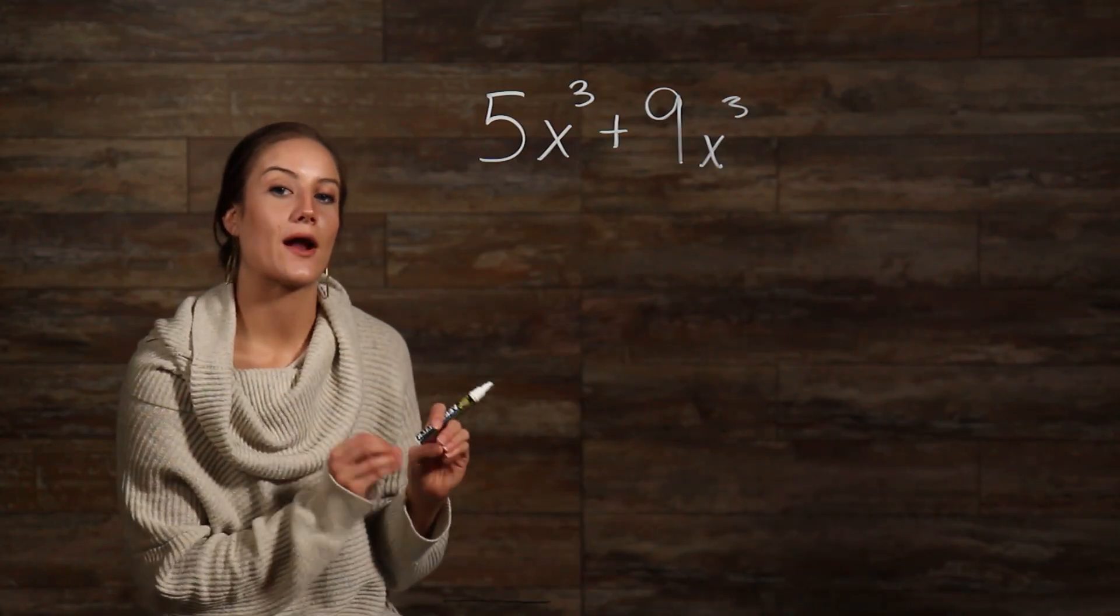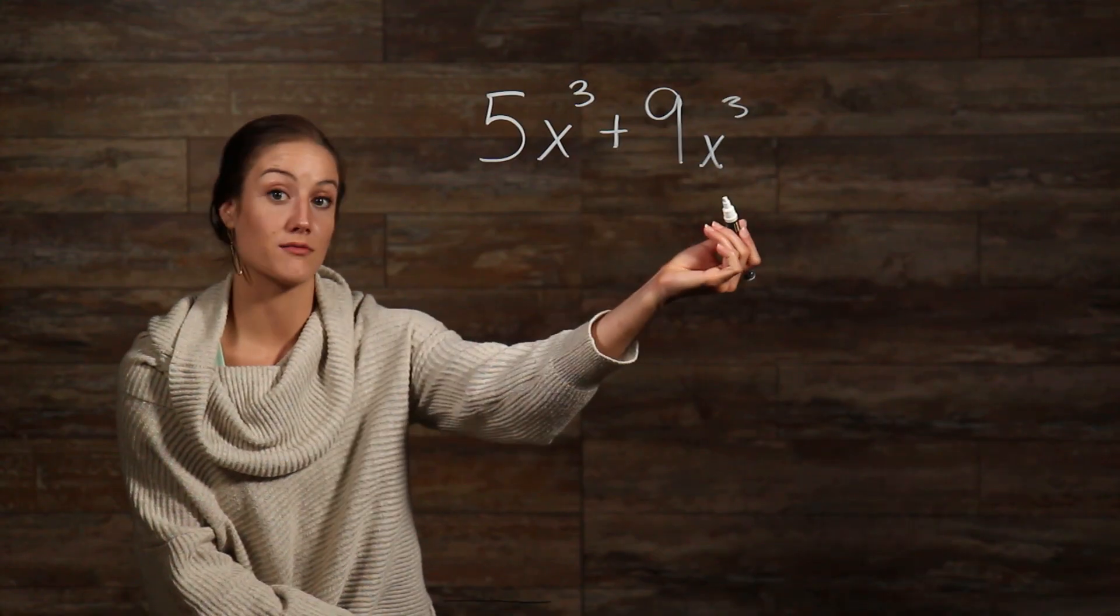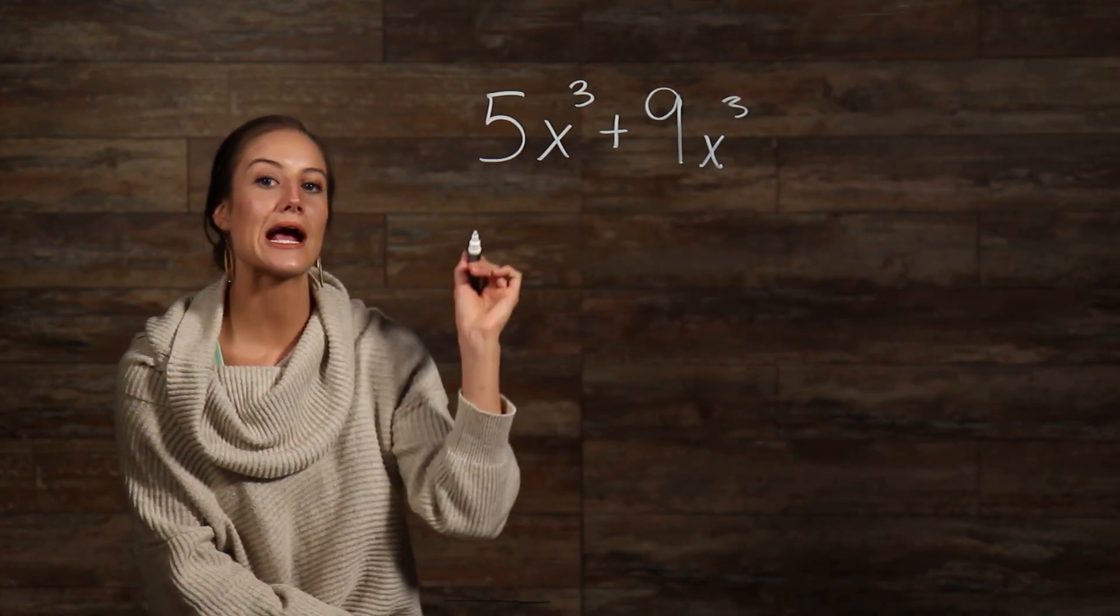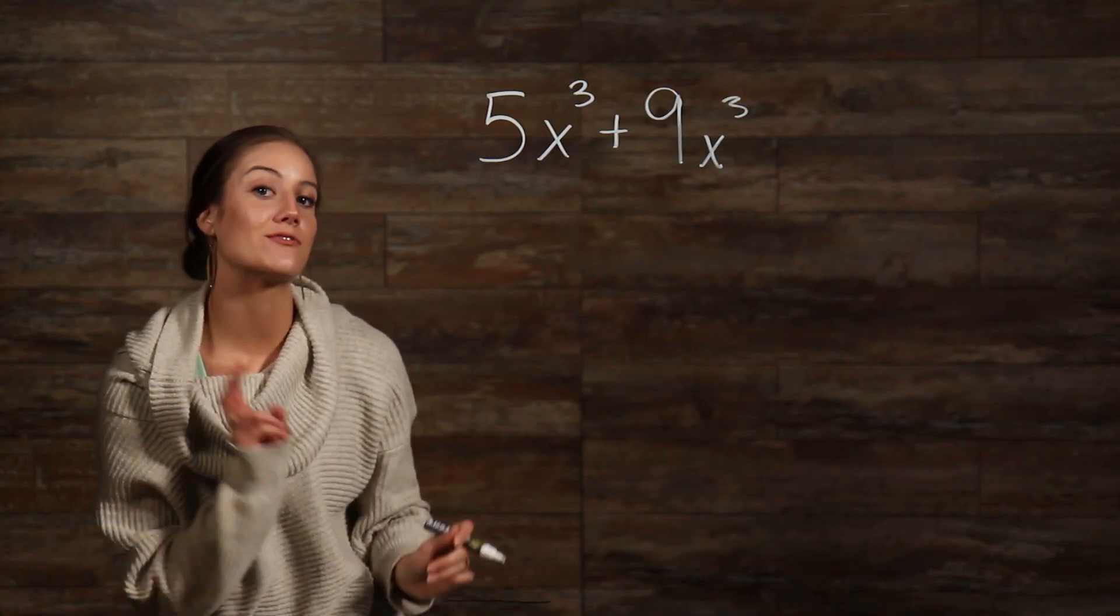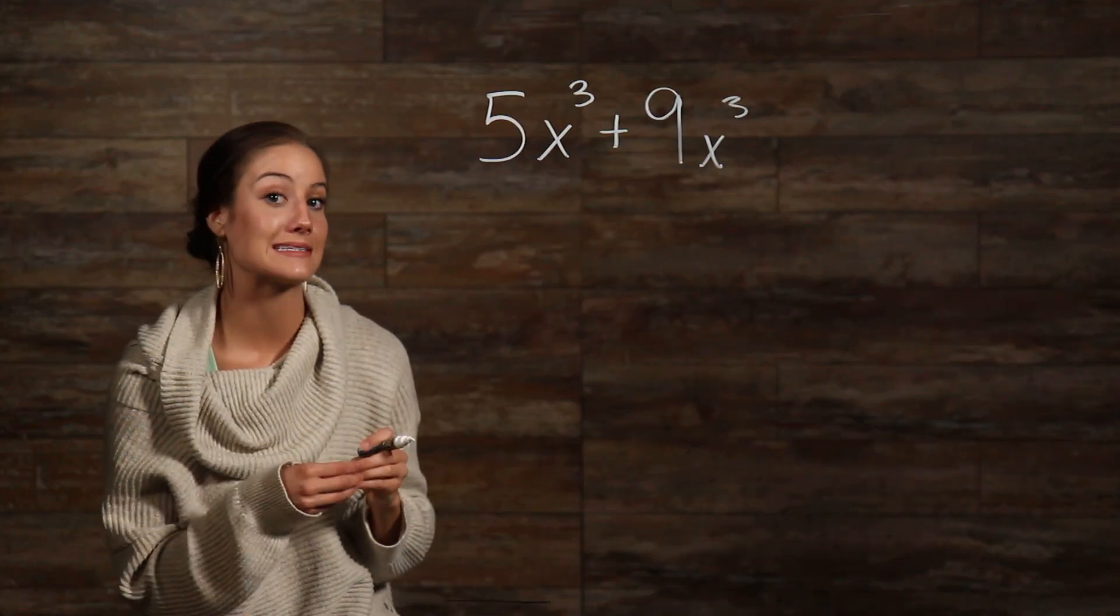Okay, so looking at our problem, we can see that our bases are the same, we have the same variable here, and our exponents are the same, which means we have two like terms that can be combined together.